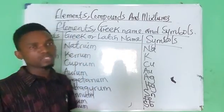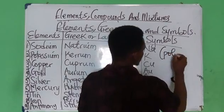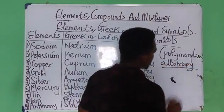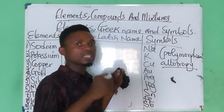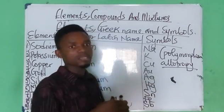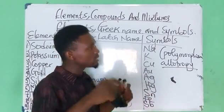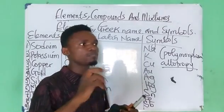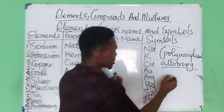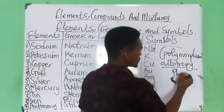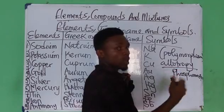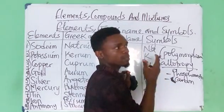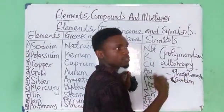Now, elements such as metals and non-metals undergo a phenomenon called polymorphism — or I'll call it allotropy. Allotropy is the occurrence of elements in the same physical state. Please take note that not all elements undergo allotropy. Elements that do include: phosphorus, which has red and white phosphorus; carbon, which exists in two allotropic forms — the crystalline forms graphite and diamond, and the non-crystalline forms charcoal and coke.